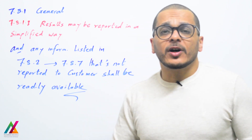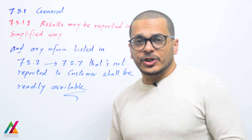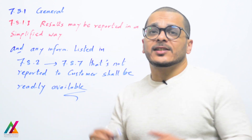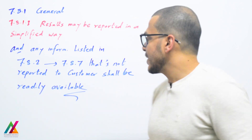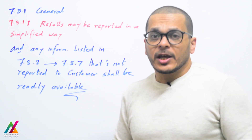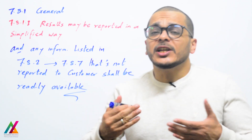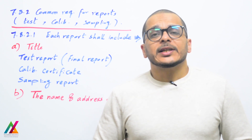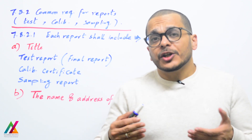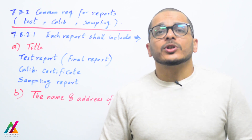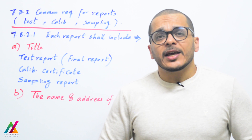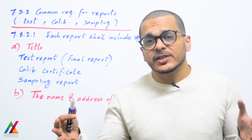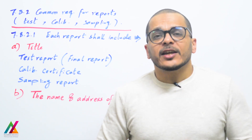As mentioned in clause 7.8.1.3, results shall be reported in a clear and simplified way for easy interpretation. Any information listed in clauses 7.8.2 through 7.8.7 for reporting of results from ISO documents that is not reported to the customer shall be readily available when the customer requests it. All results shall be reviewed and approved by the technical lead of each unit, then reported simply and clearly, with all information from 7.8.2 to 7.8.7 readily available upon request.